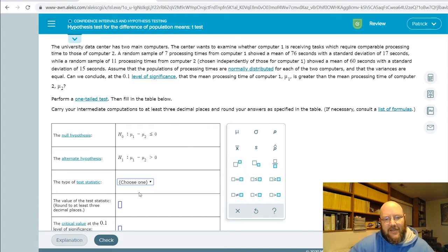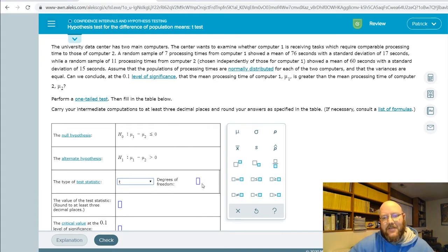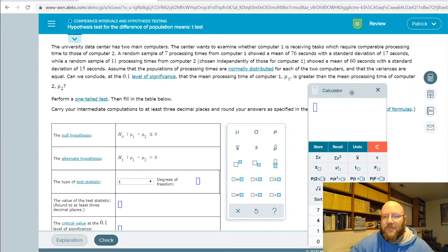Test statistic on here, here's t, but it's asking us for degrees of freedom. We're comparing two populations, so it's going to be the sample sizes added together minus two for degrees of freedom here. And so let's just go ahead and do that. Our sample size on the first one was seven, and then our second one was eleven. Take those, subtract two from that, and there we go, we get sixteen.